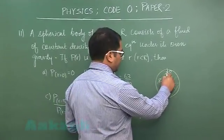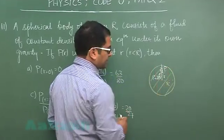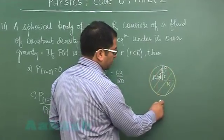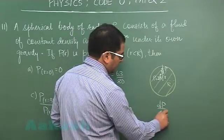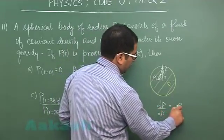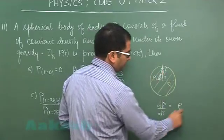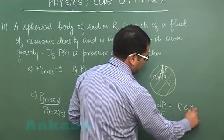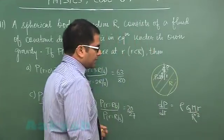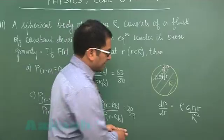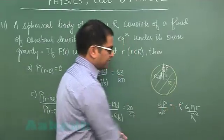Since gravity at different places is different so we better go with the term of pressure gradient that would be DP by DR would be rho times G at this point. That is Gm small r by R cube but then again with increase in R the value of pressure is decreasing so we need to put a negative sign.